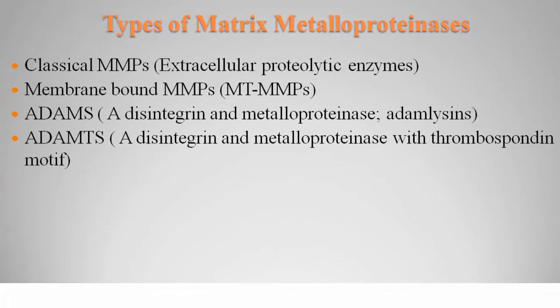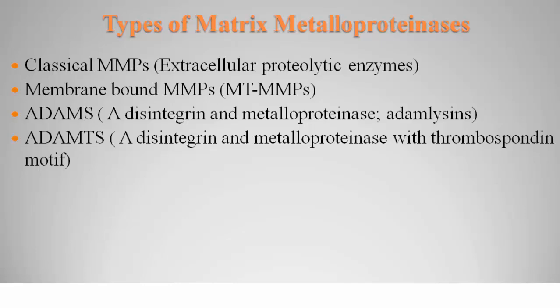There are different types of matrix metalloproteinases. There are classical MMPs, which are extracellular proteolytic enzymes. There are membrane-bound MMPs. There are ADAMs — a disintegrin and metalloproteinases — like ADAM-10. These cleave transmembrane receptors like HER2, which is responsible for breast cancer, making the HER2 receptor active. And ADAMTS — a disintegrin and metalloproteinases with thrombospondin motif — where thrombospondins are present in the transmembrane and help in cell-to-cell matrix connection.